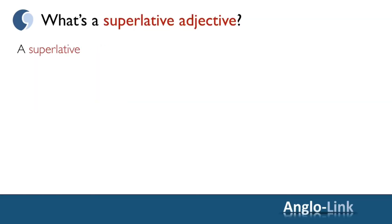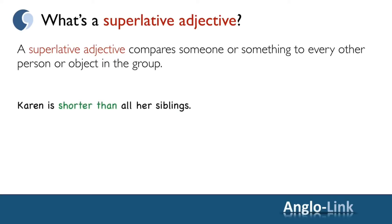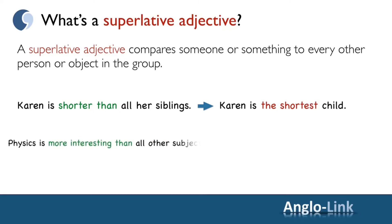A superlative adjective compares someone or something to every other person or object in the group. For example, Karen is shorter than all her siblings, which means that Karen is the shortest child.